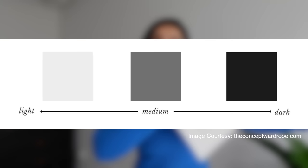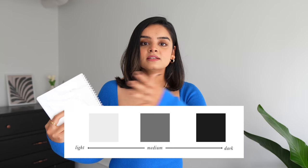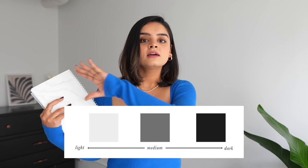Now let's understand what dark, light, bright, and soft mean in terms of human characteristics. You need to understand three terms: value, contrast, and chroma. Value means depth — it describes how light or dark a color is. More black added makes it darker, more white makes it lighter. This range from light to dark is called value.